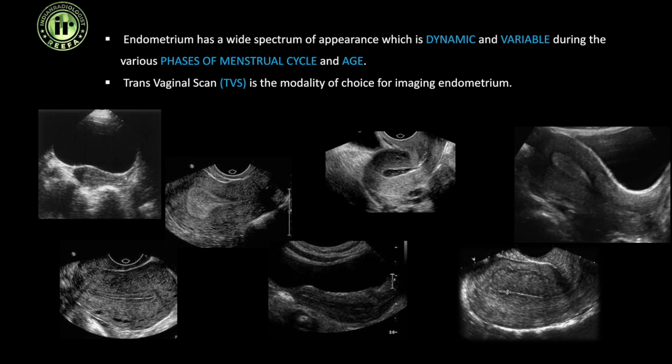Endometrium has a wide spectrum of appearance. It's a very dynamic structure and it's pretty variable during the various phases of the menstrual cycle, and there's a lot of variation seen in the various age groups also. So knowing the difference in the different age groups and the difference in appearance during the various phases of the menstrual cycle is important to identify what is normal and what is abnormal. The optimal modality of choice for imaging the endometrium is a transvaginal scan.